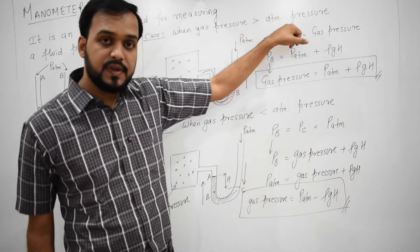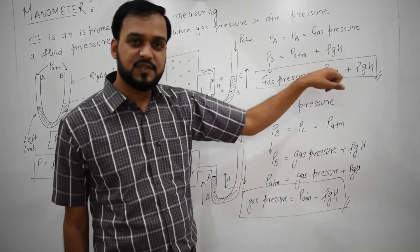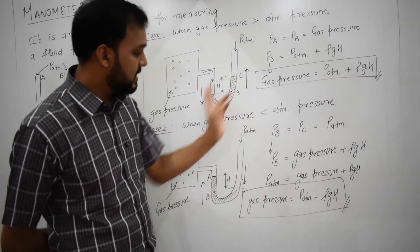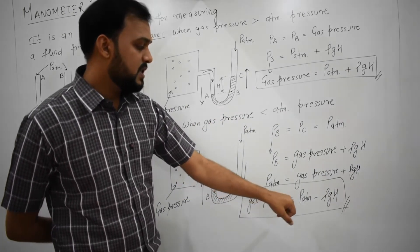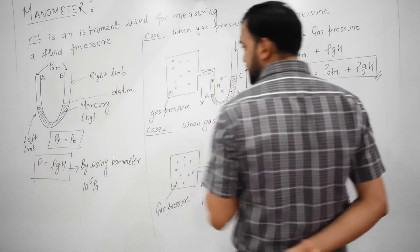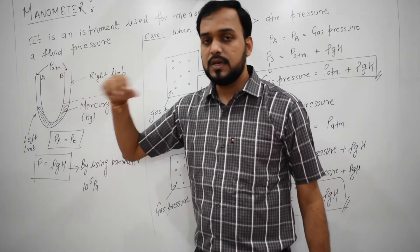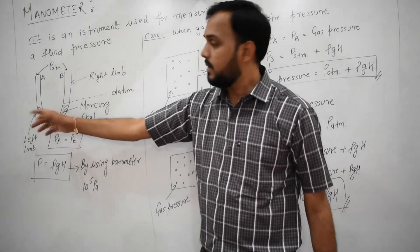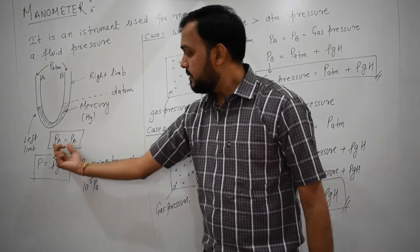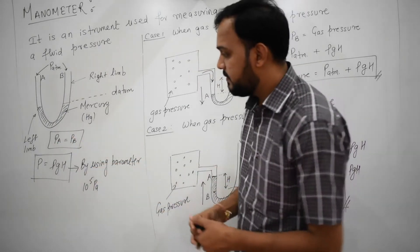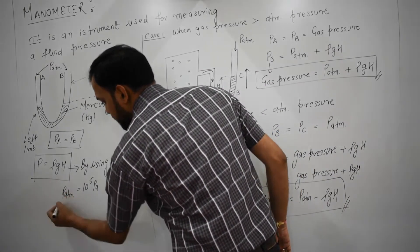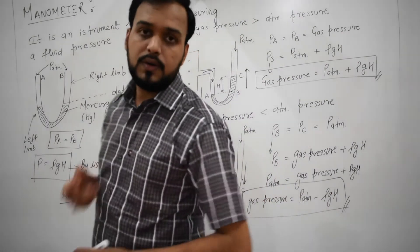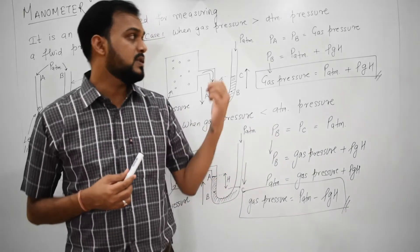Keep these two things in mind: if the gas pressure is greater than atmospheric, then for solving numericals you use the formula where gas pressure equals atmospheric pressure plus rho GH. If atmospheric pressure is greater, you use the formula gas pressure equals atmospheric pressure minus rho GH. If both ends are open to the same surroundings, there would be no height difference because pressure at both points is the same — PA equals PB. The atmospheric pressure value we can take as 10 to the power of 5 pascal.